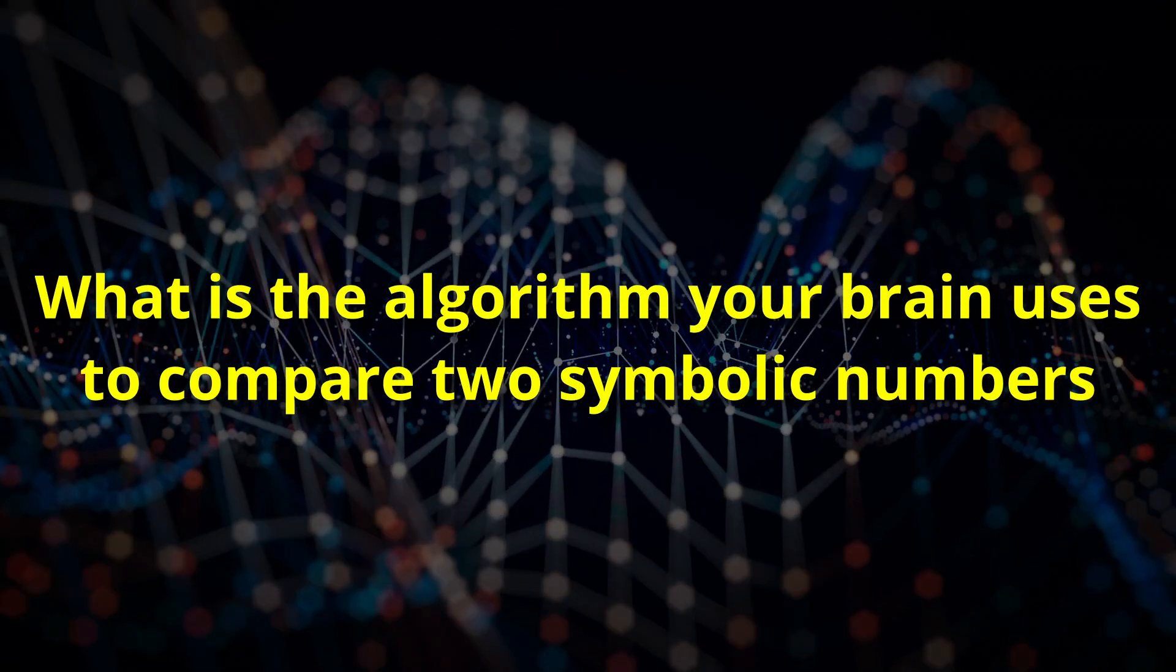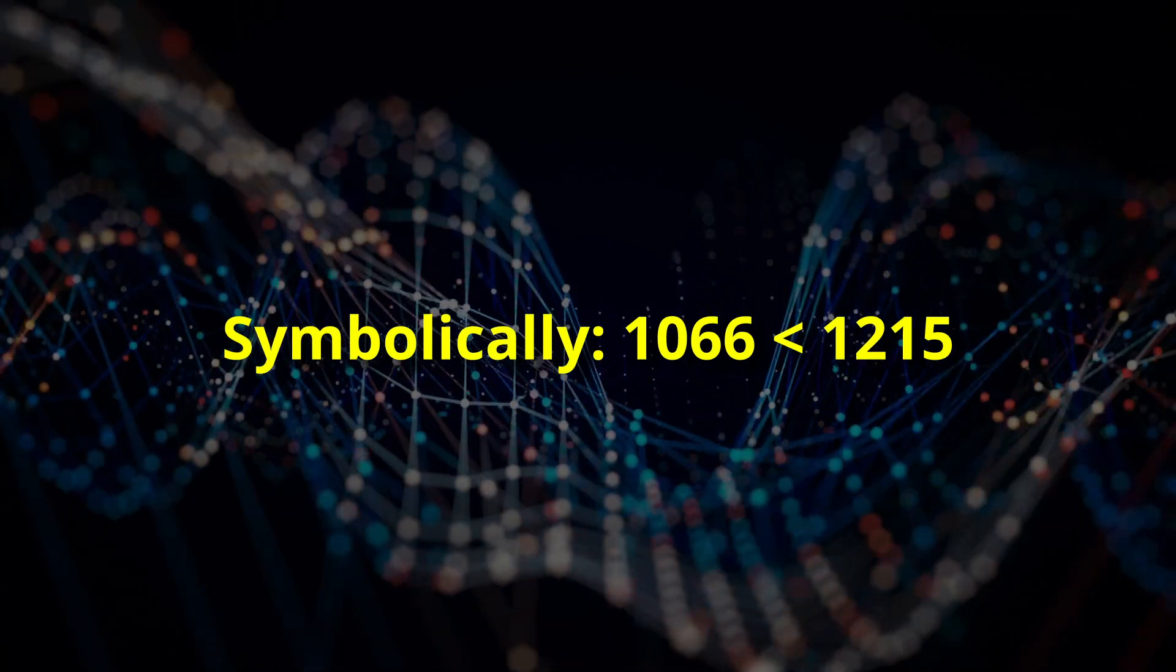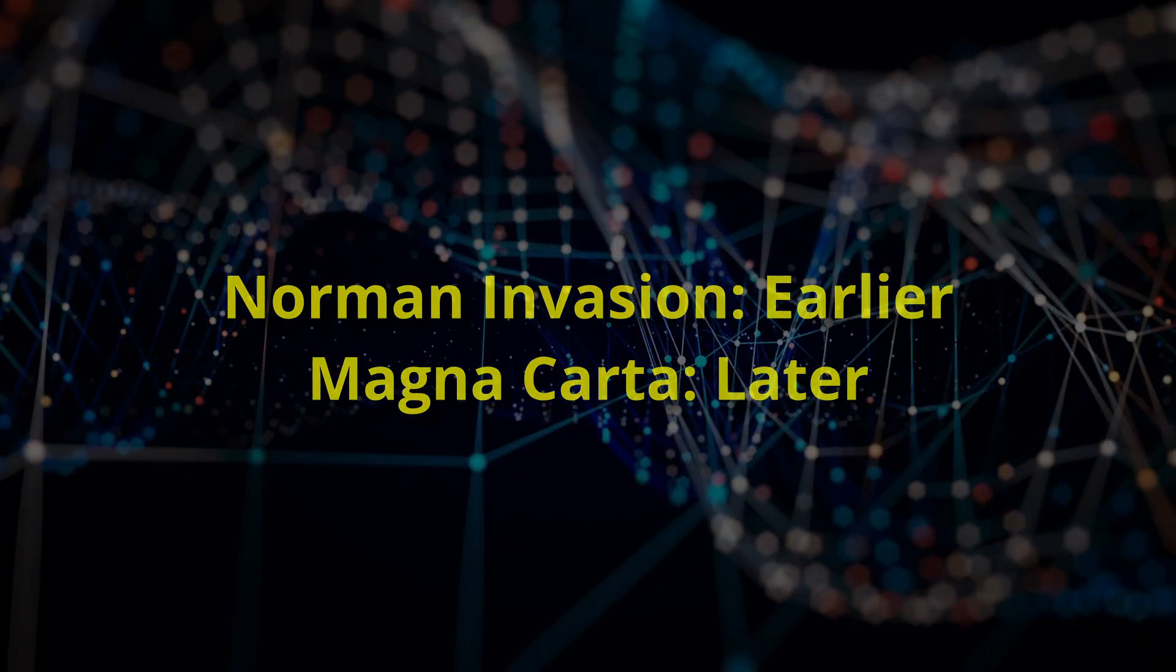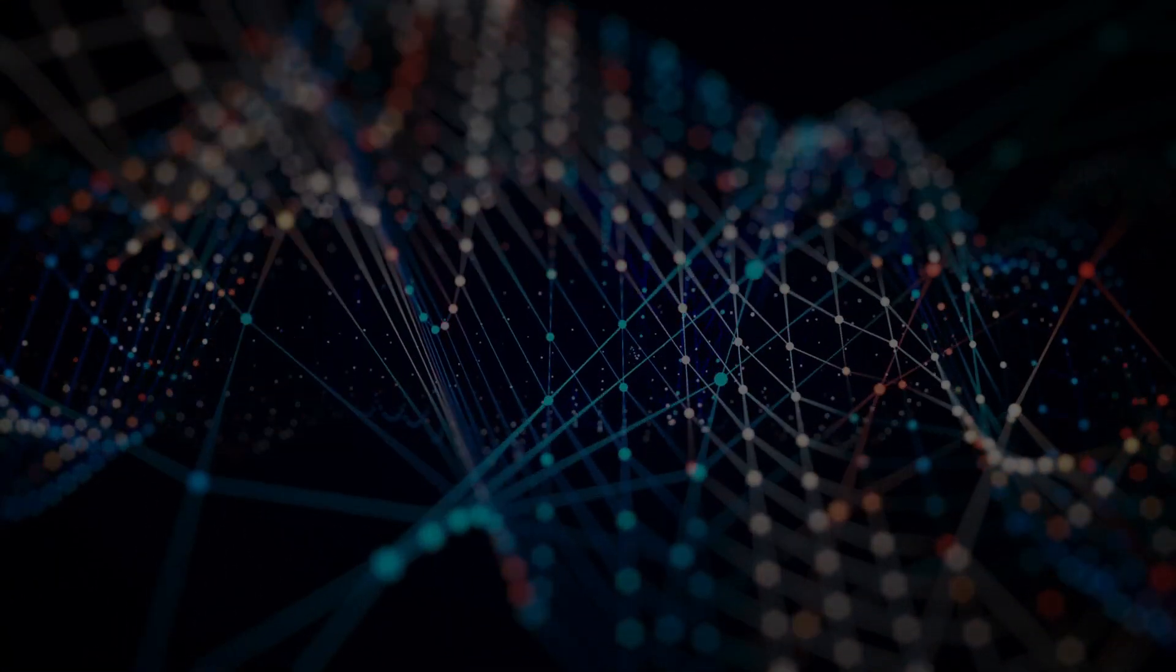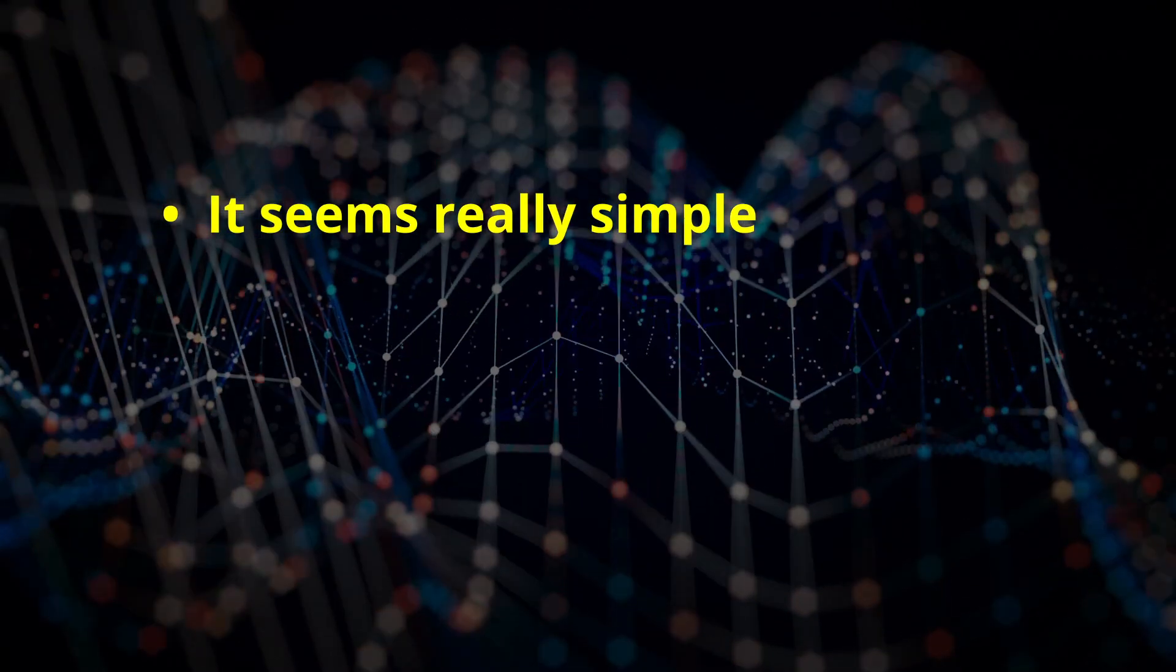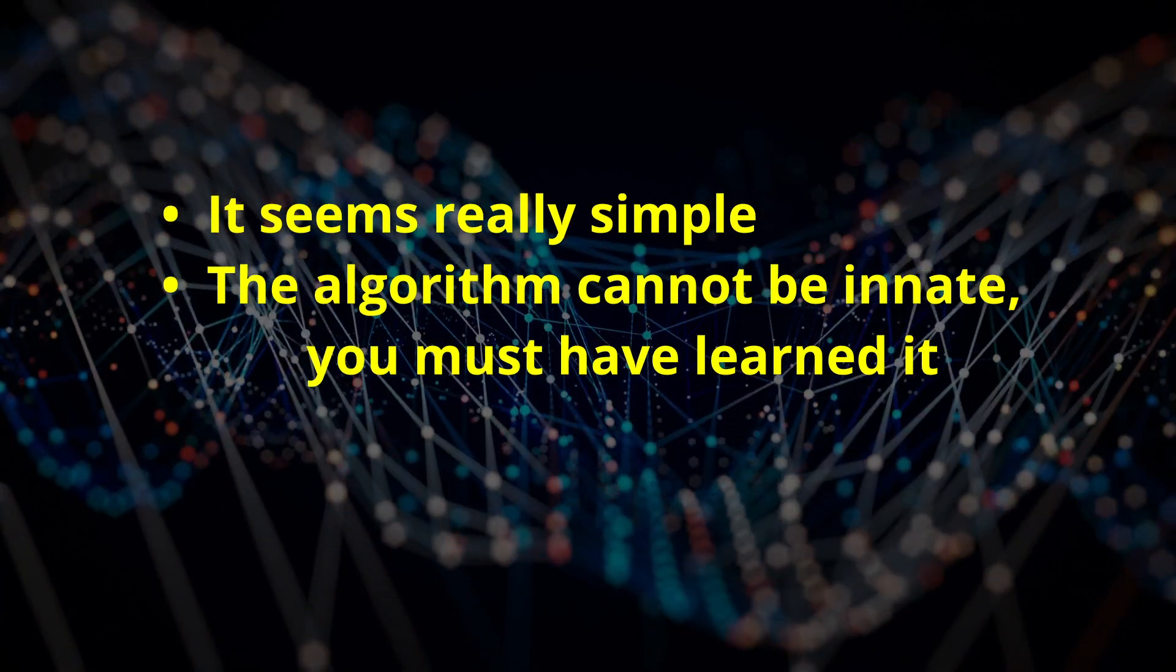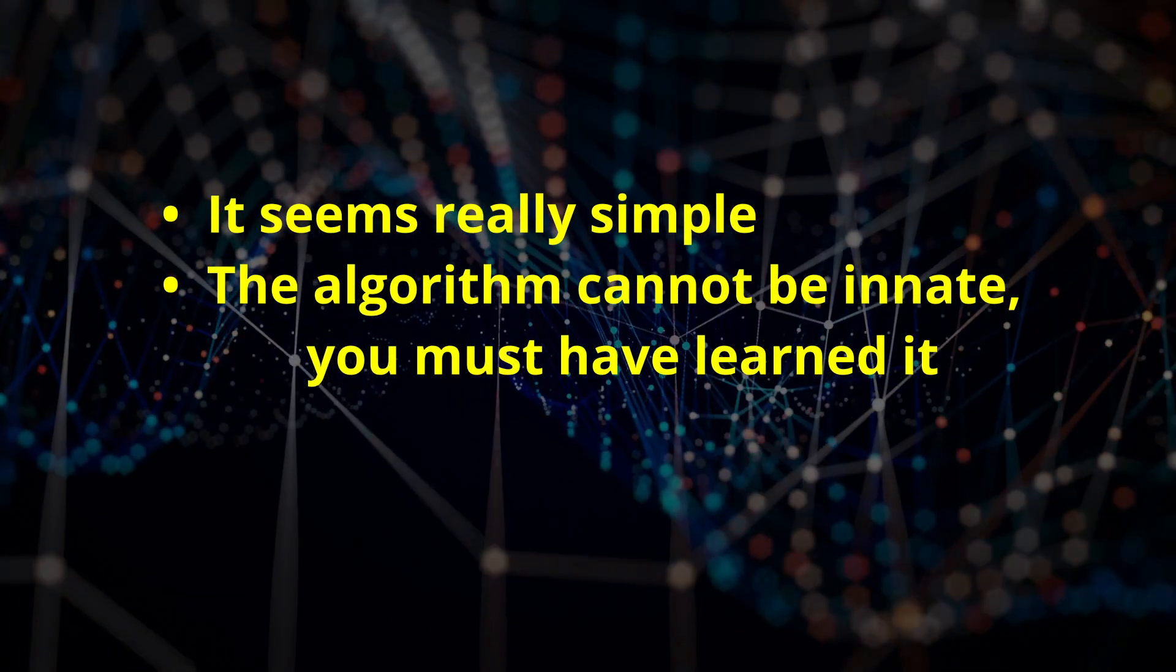In your brain, how can you compare 1066 and 1215, and conclude that 1215 is larger, and therefore the Norman Invasion came first, or conversely, that the Magna Carta came later? But before getting into the details, why did I choose this algorithm as an example? It seems really simple. But I'll show you how things are often more complex than they appear. I know you must have learned this algorithm.